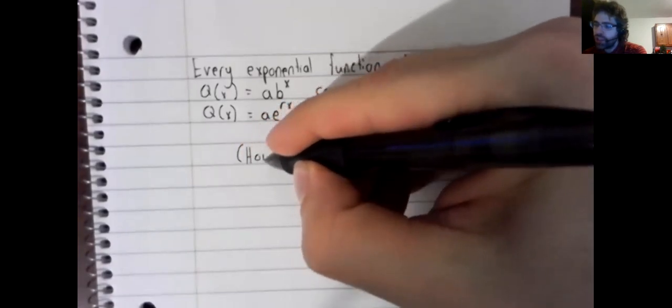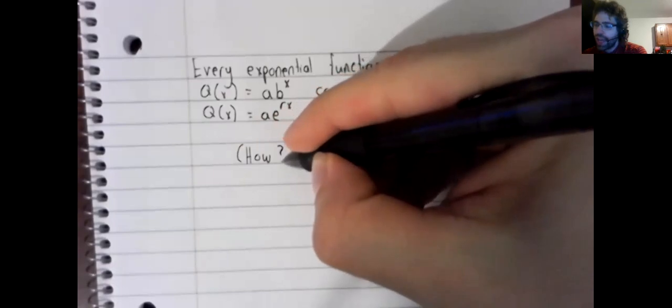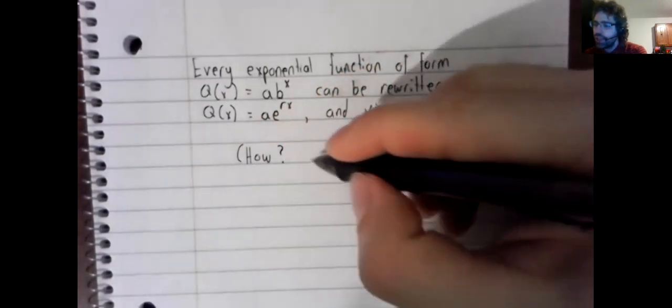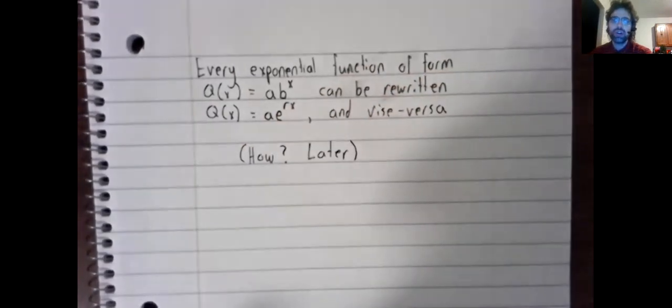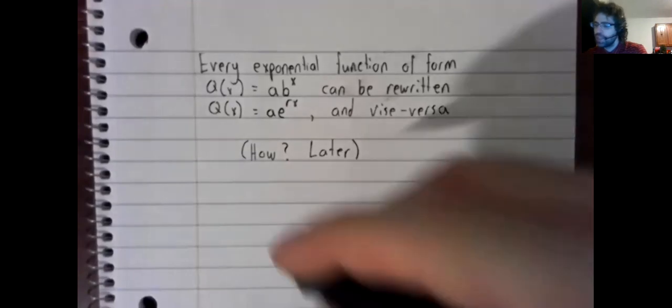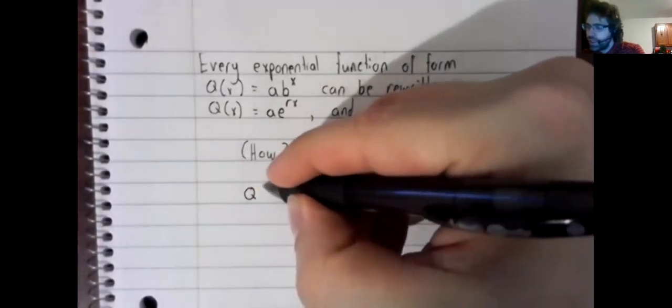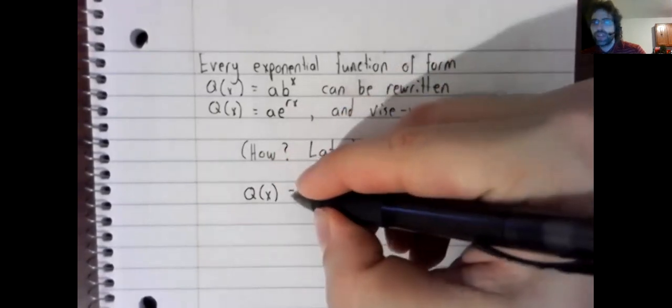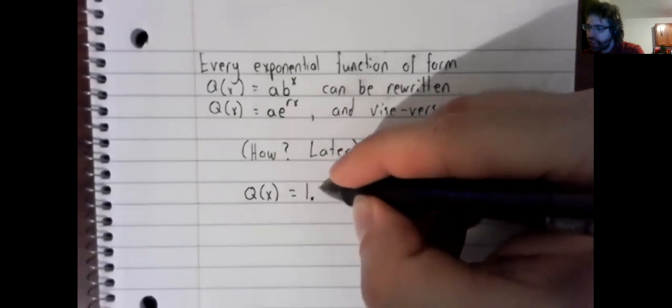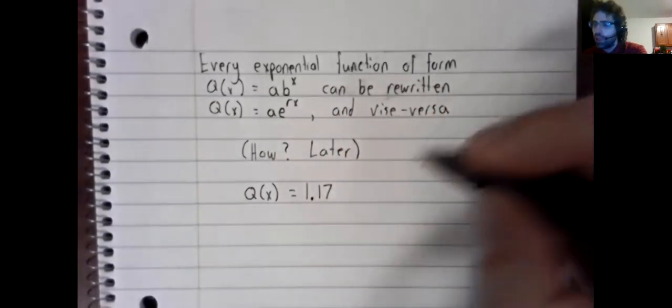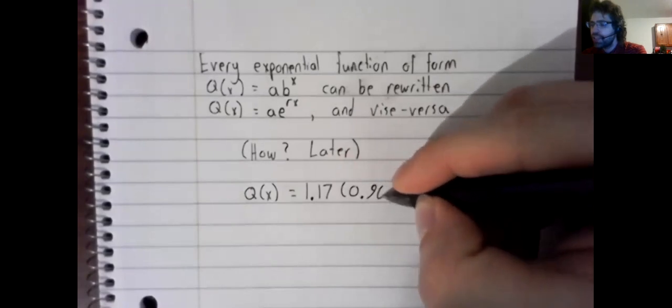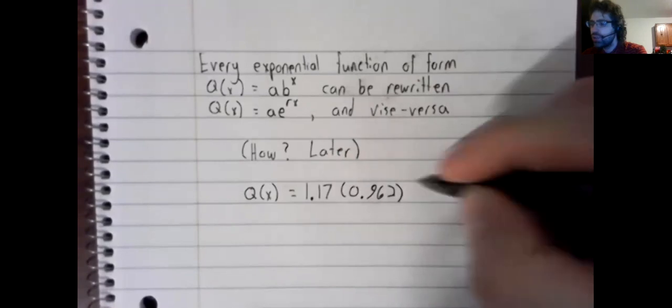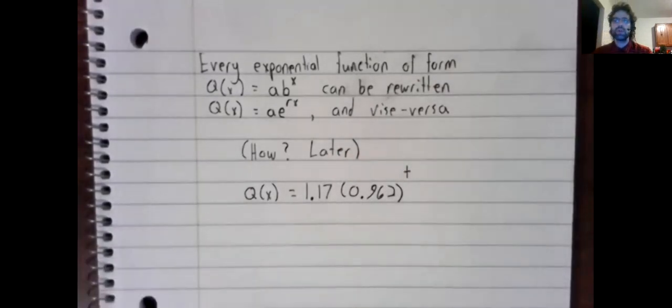The question of how we'll perhaps address later. Let's just give a quick example. Say that we have q(x) = 1.17 times 0.962 to the power of t.